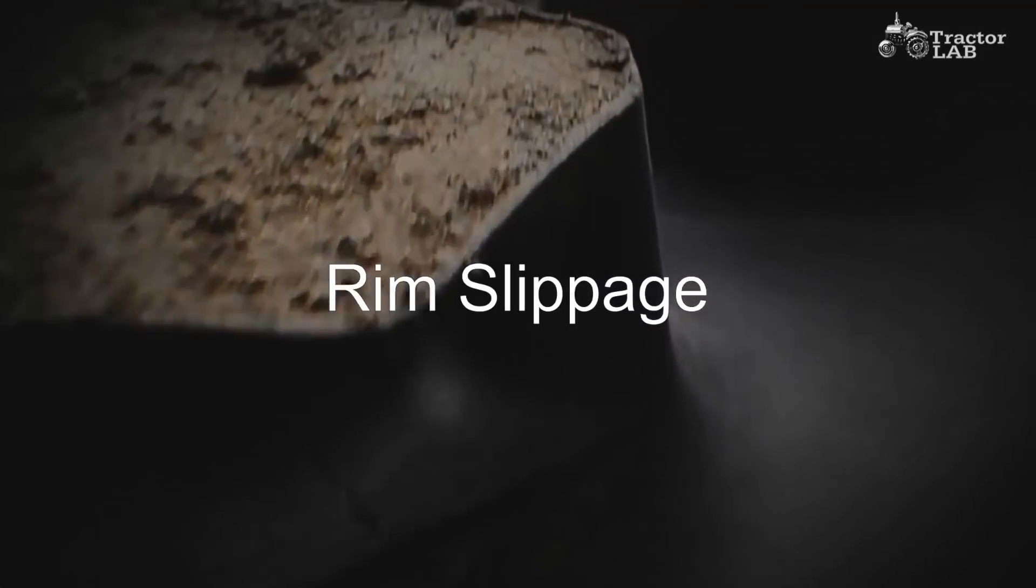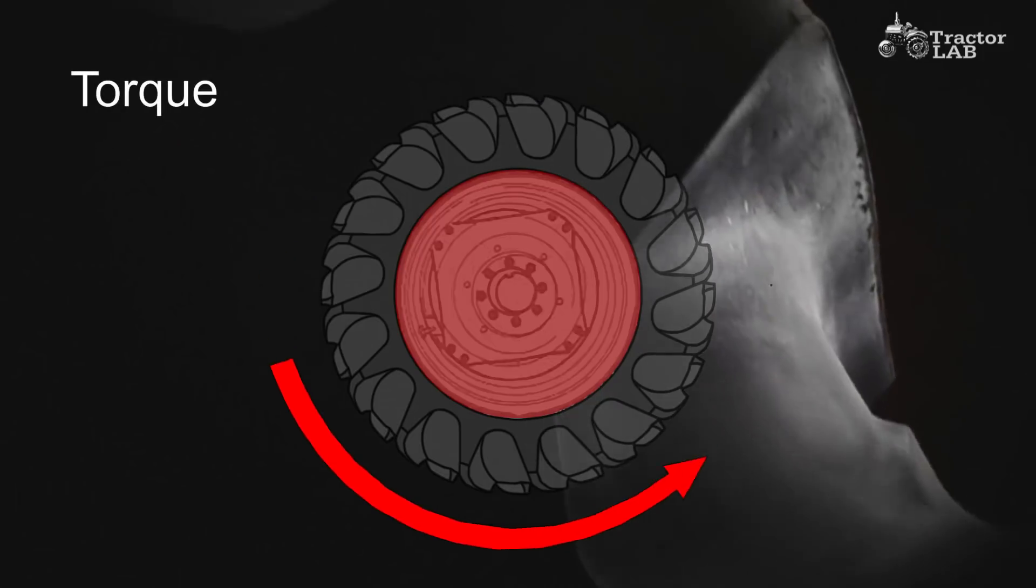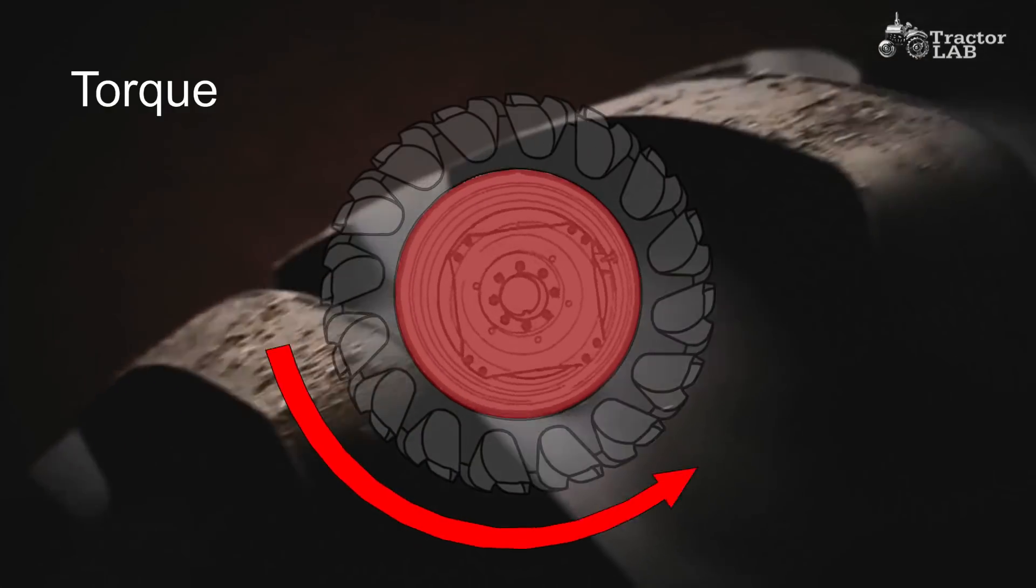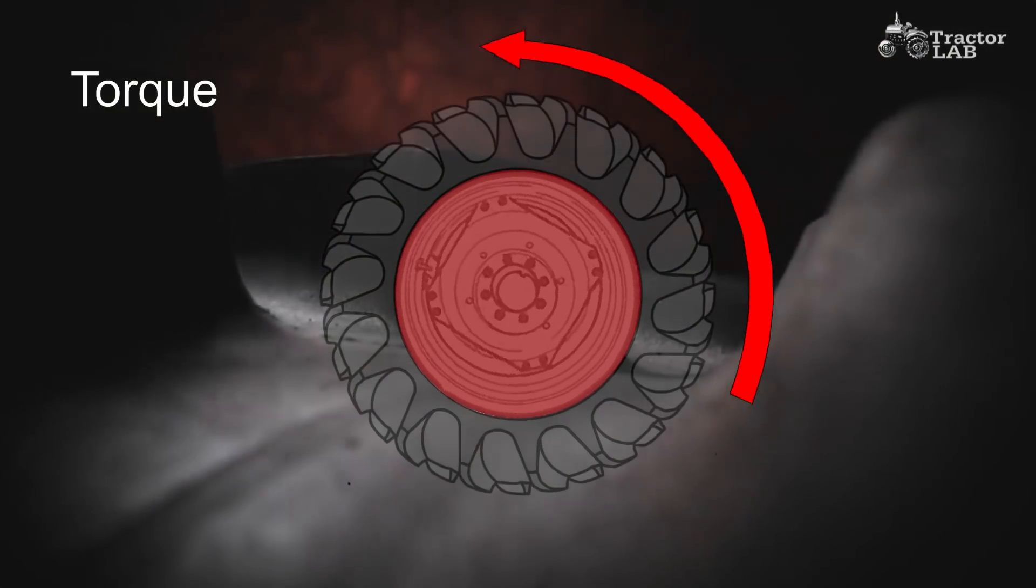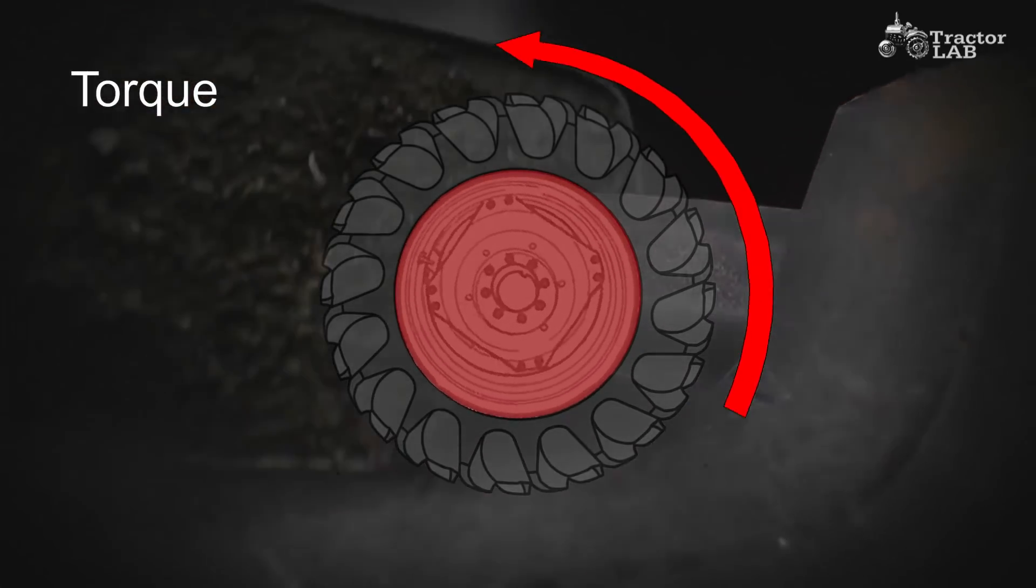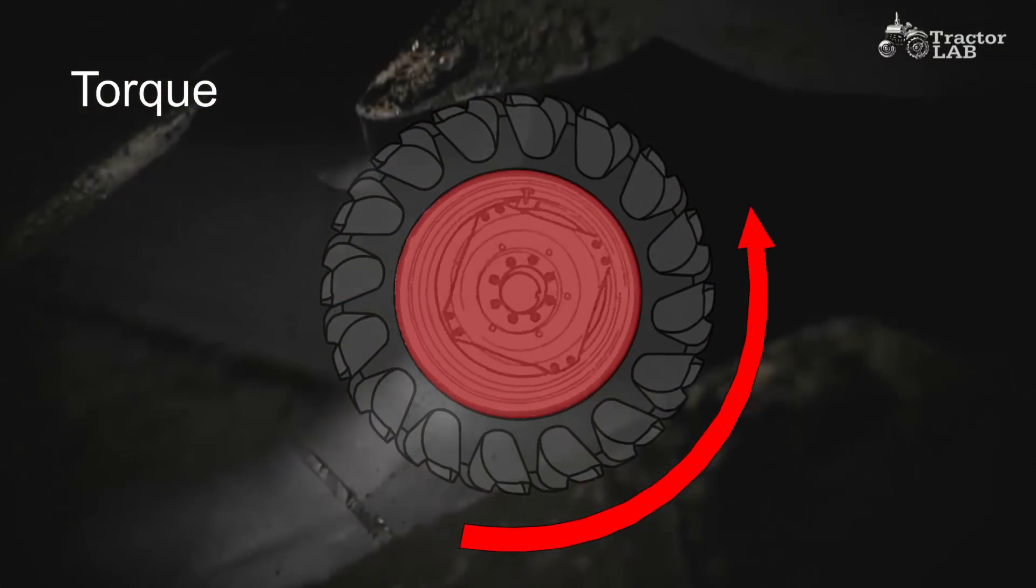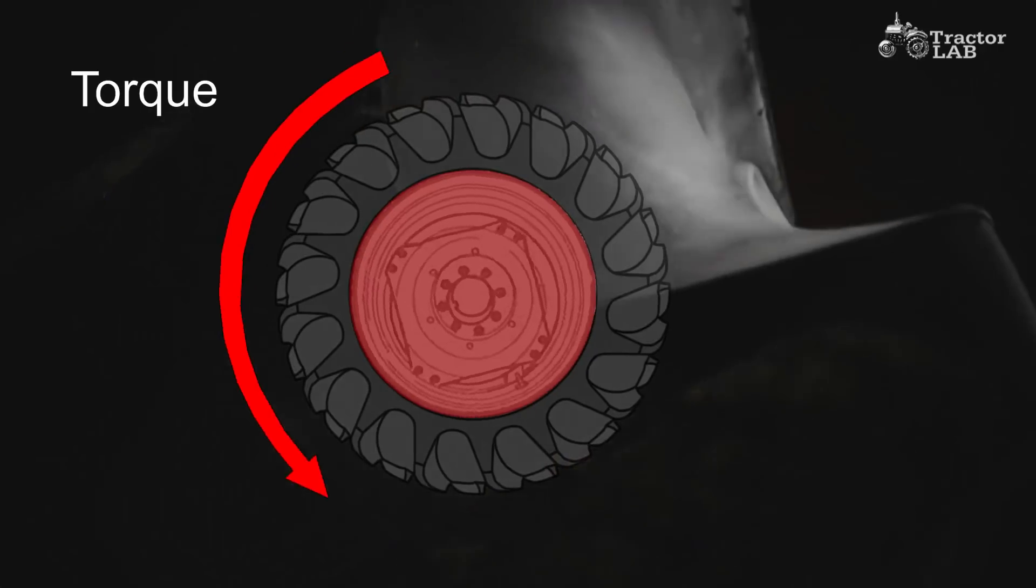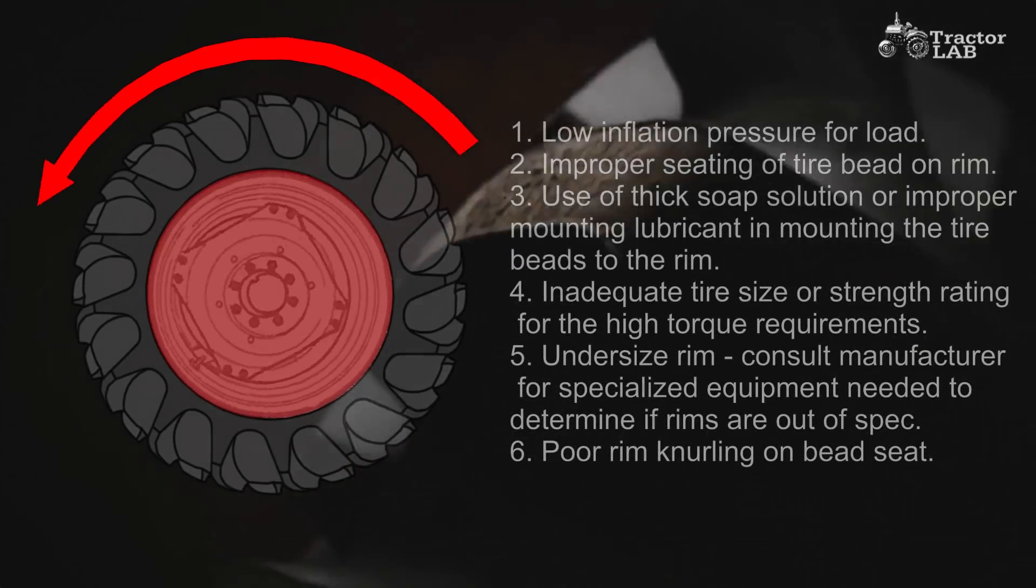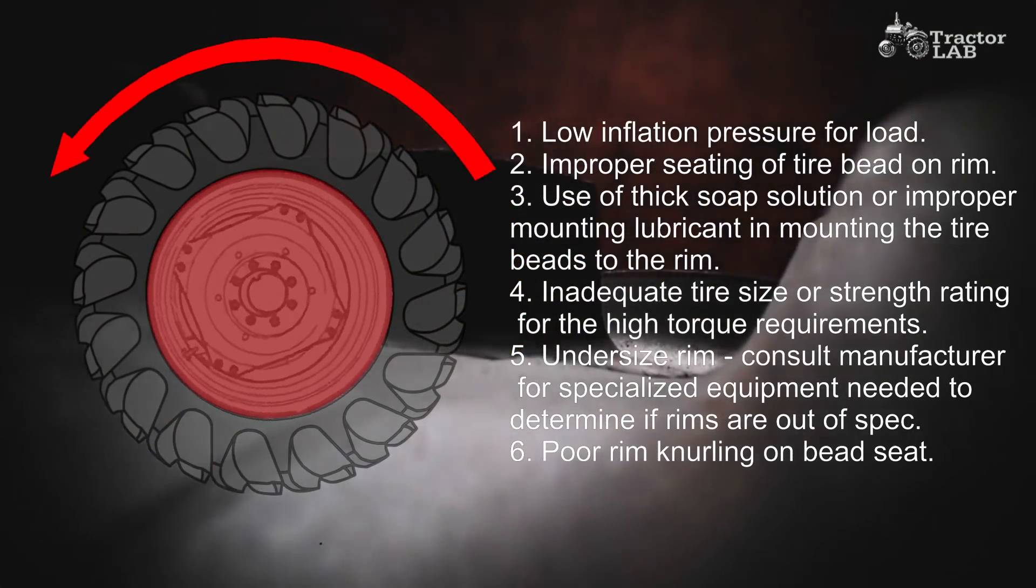Rim slippage. In attempting to obtain maximum tractor drawbar pull, tube valves are occasionally torn off because of slippage of the tire bead on the rim. Tubeless tires, although immune to pulled valves due to slippage, may still suffer abrasion on the base of the bead after prolonged operation with the tire slipping on the rim. Tire slippage on the rim may be caused by low inflation pressure for load, improper seating of tire bead on rim.